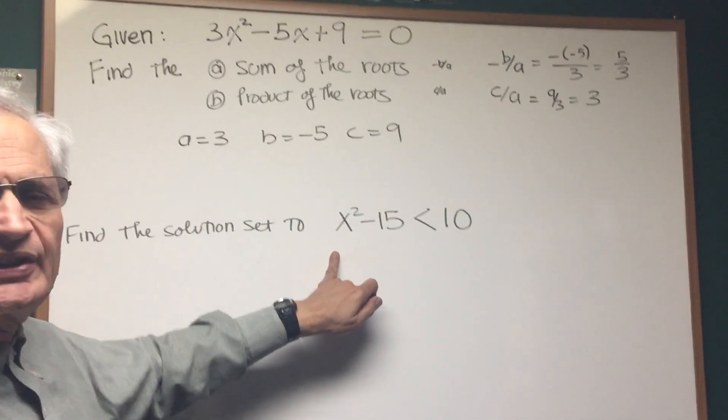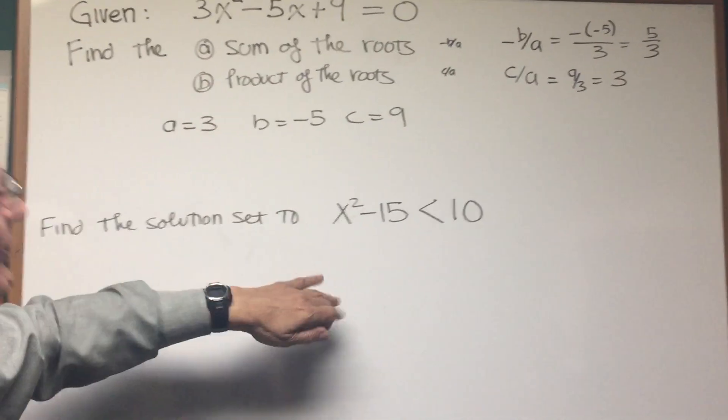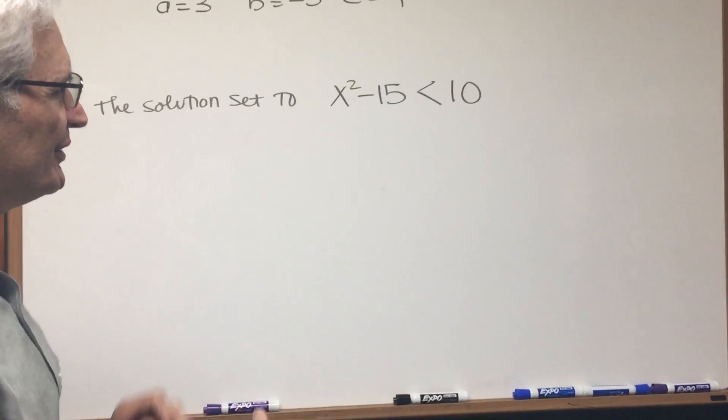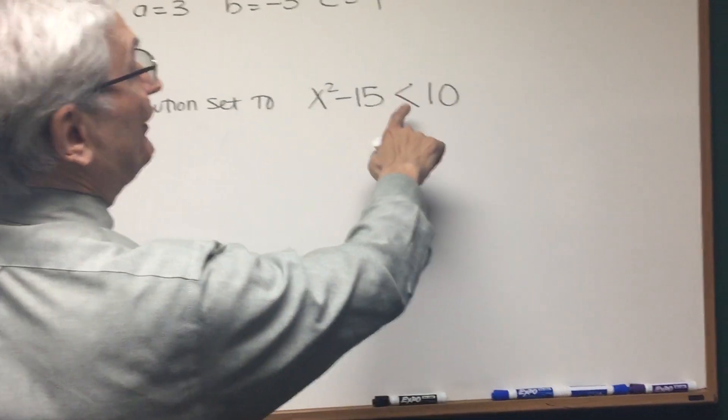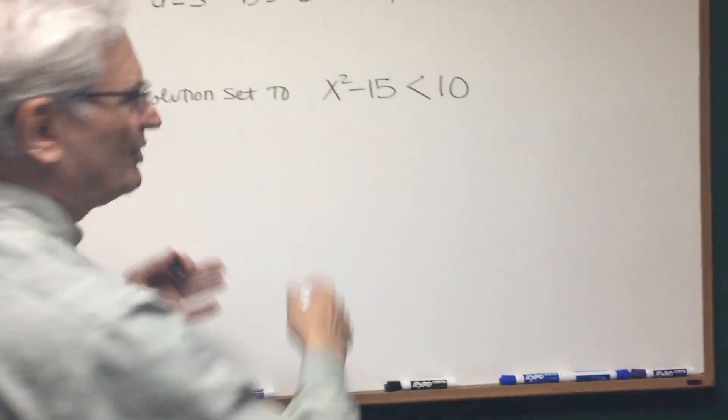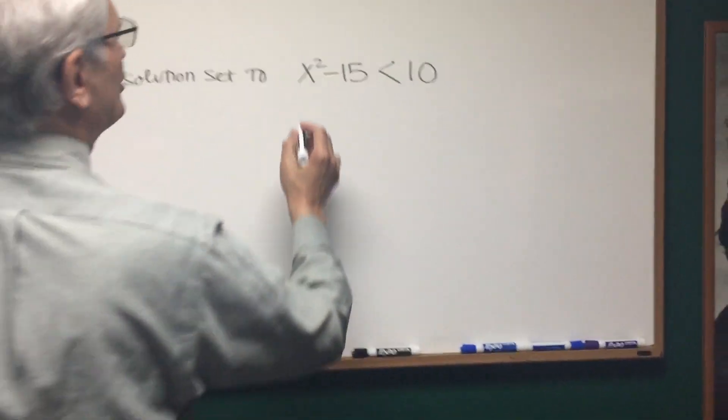Okay, here's a quadratic inequality. It's in the same category of problem, but we're going to approach this on a very different level. x² - 15 < 10. Okay, so let's get everything to zero, which is standard operation when you're dealing with a quadratic equation.